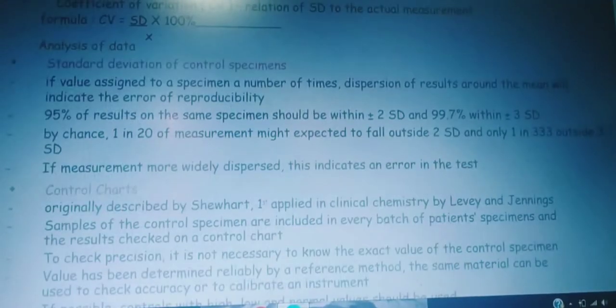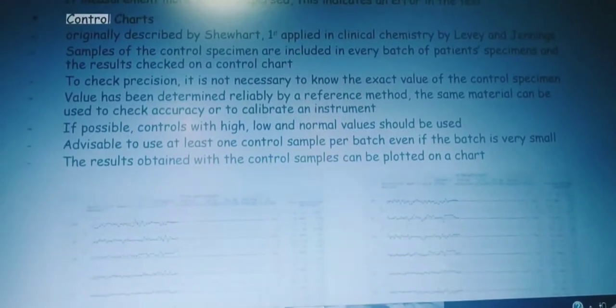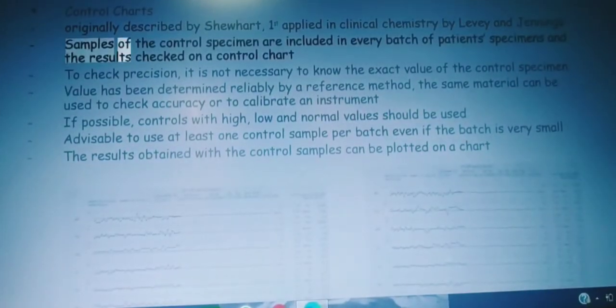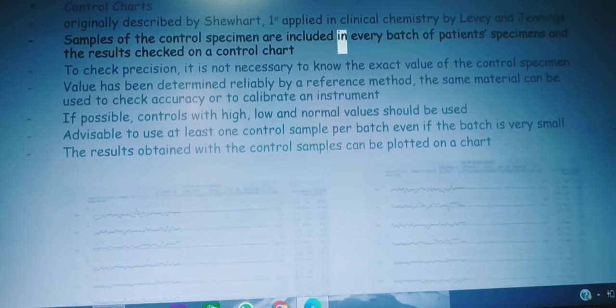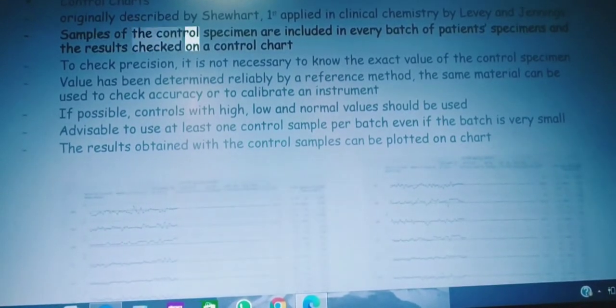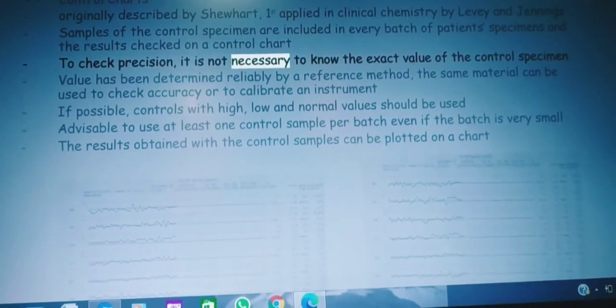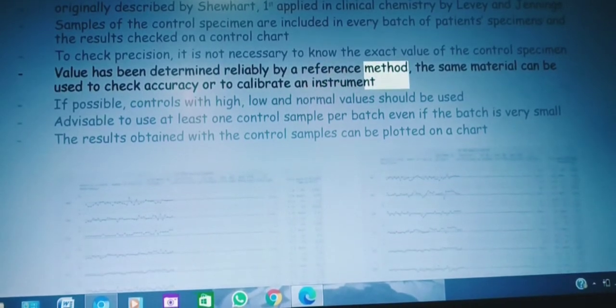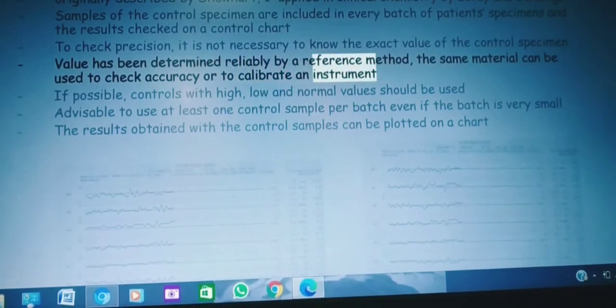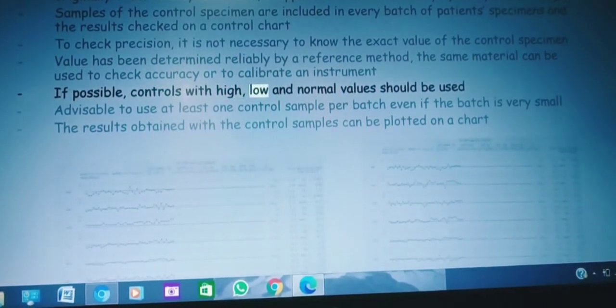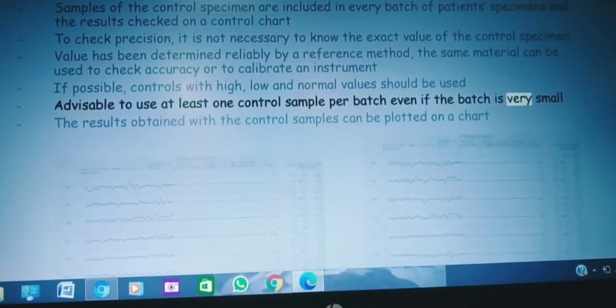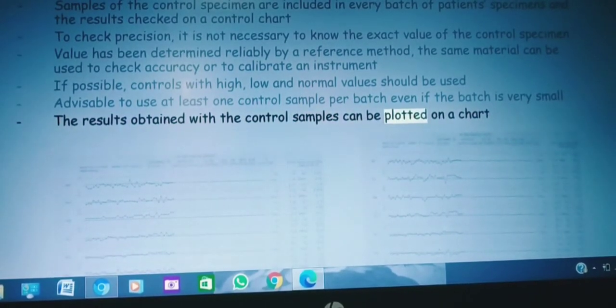If measurements more widely dispersed, this indicates an error in the test. Control charts originally described by Shewhart, first applied in clinical chemistry by Levey and Jennings. Samples of the control specimen are included in every batch of patient specimens, and the results checked on a control chart. To check precision, it is not necessary to know the exact value of the control specimen. Value has been determined reliably by a reference method. The same material can be used to check accuracy or to calibrate an instrument if possible. Controls with high, low, and normal values should be used. Advisable to use at least one control sample per batch, even if the batch is very small. The results obtained with the control samples can be plotted on a chart.